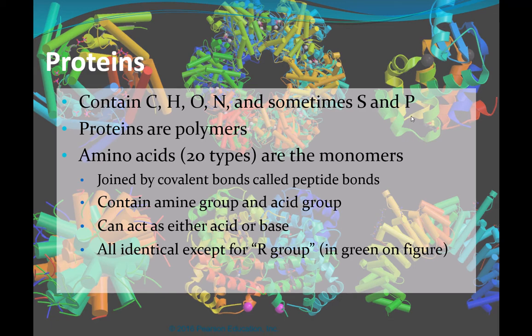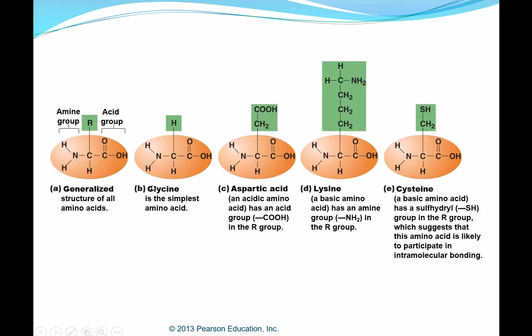Amino acids are joined by dehydration synthesis through covalent bonds called peptide bonds. Every amino acid has both an amine group — a nitrogen-containing group — and an acid group. Because they have the amine group, they can act as a base, or they can act as an acid. All amino acids are identical except for what we call the R group.